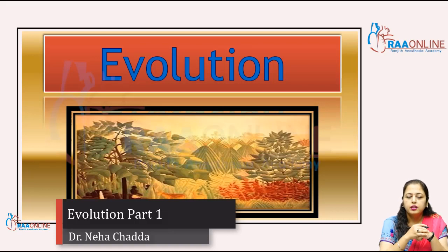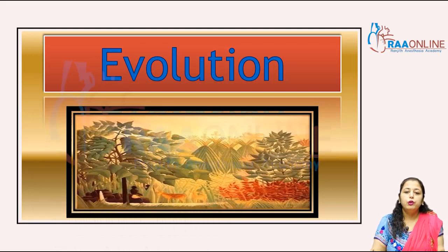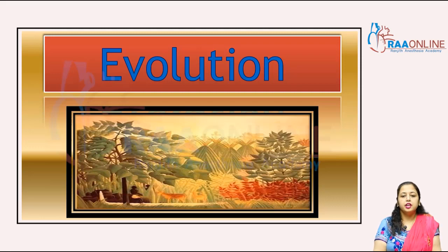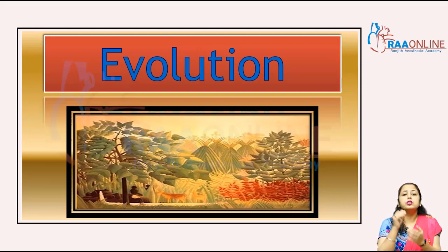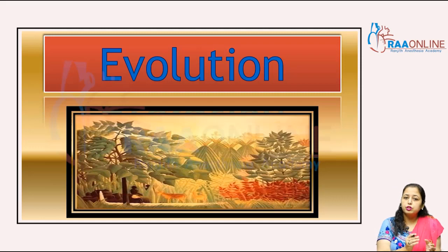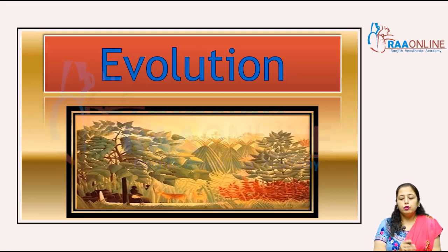Hello everyone, welcome to RAW Online. Today we will discuss about evolution. In this chapter we will study about the origin of life — the history of life which formed on the Earth for the first time. We will look at how the Earth was formed, what changes occurred, what are the evidences of biological and chemical evolution, and what hypotheses or theories relate to the origin of life on Earth. The origin of life and the evolution of the Earth forms a biodiversity — what kind of flora and fauna is formed here.